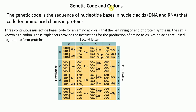A codon is three continuous nucleotide bases that code for an amino acid, or a signal for the beginning or end of protein synthesis. These triplet sets provide instructions for the production of amino acids, and these amino acids link together to form proteins. This picture shows all 64 codons.